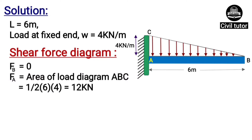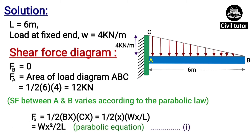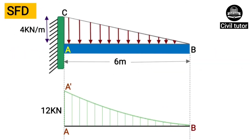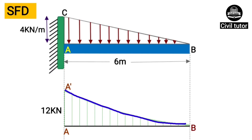It should be noted that the value of shear force between points A and C varies according to the parabolic law, as derived in our previous lecture. To draw the SFD, we start from the baseline AB. Since shear force at B is 0, we mark that point as 0, and at point A we draw +12 kilonewton to some scale above the baseline. By joining A-dash-B with a parabolic curve, we get the resulting shear force diagram.